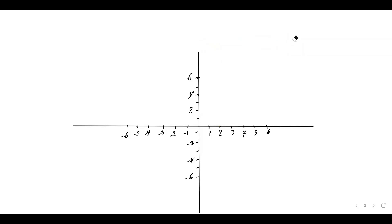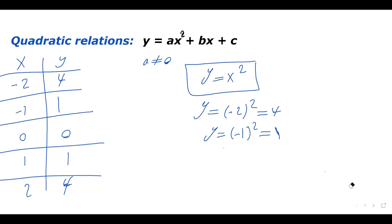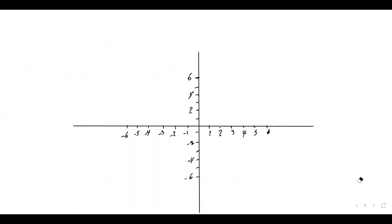Plotting the points: negative two and four, negative one and one, zero and zero, one and one, and two and four. Connecting these points gives the graph of the quadratic relation.